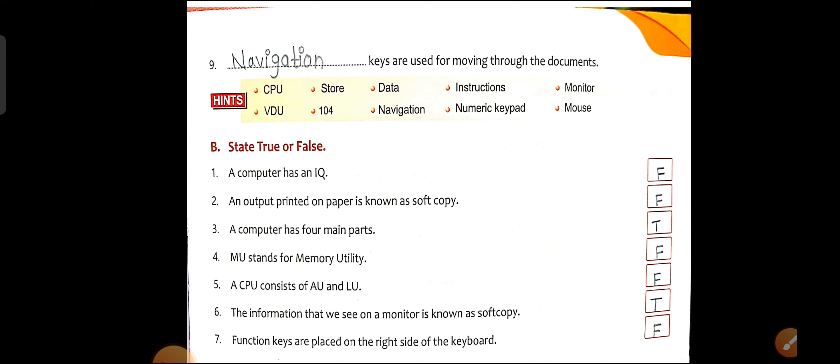Point number 6: The information that we see on a monitor is known as a soft copy. This statement is correct — True. What we see on the computer screen is called a soft copy, but if it is printed on paper, it becomes a hard copy.